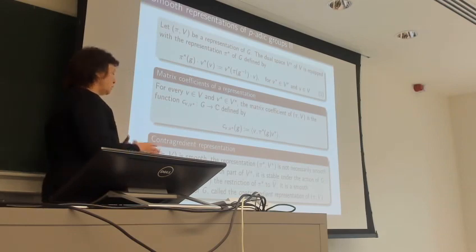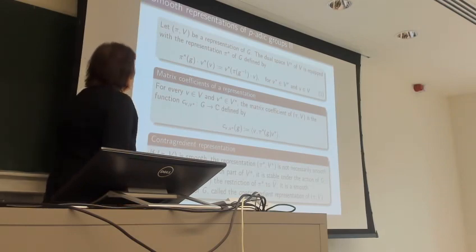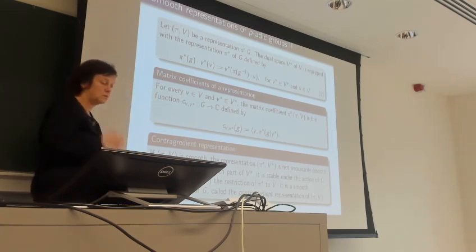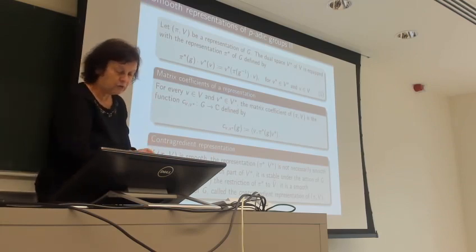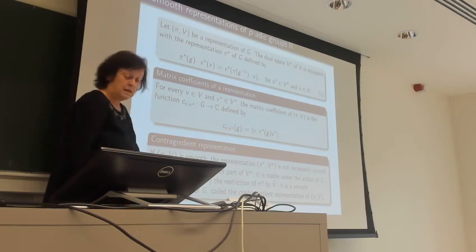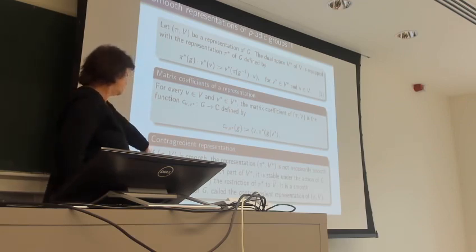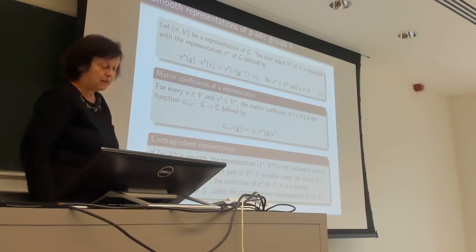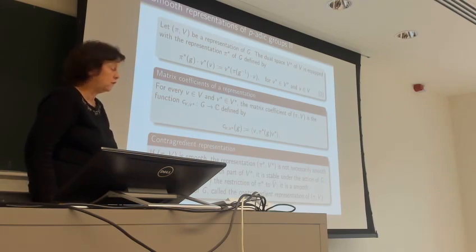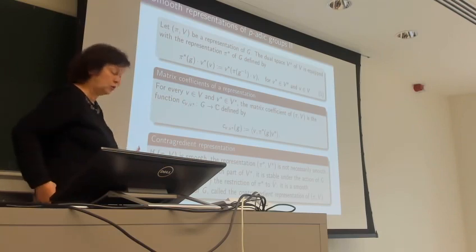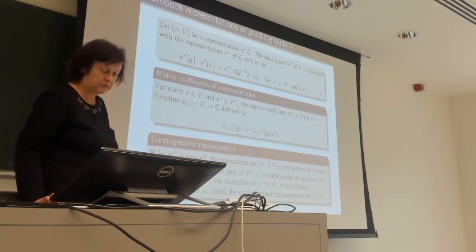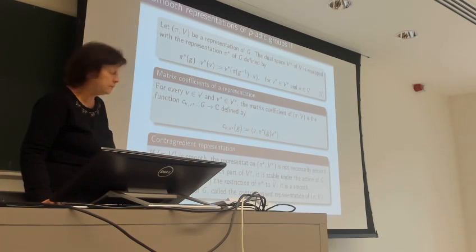If I start with a smooth representation V, the dual representation V* is not always smooth, but I can consider its smooth vectors — the smooth part of V*, which is usually called V-tilde. I then get a new representation, the restriction of pi* to V-tilde, and this representation is smooth by construction. It is called the contragredient representation of (pi, V).